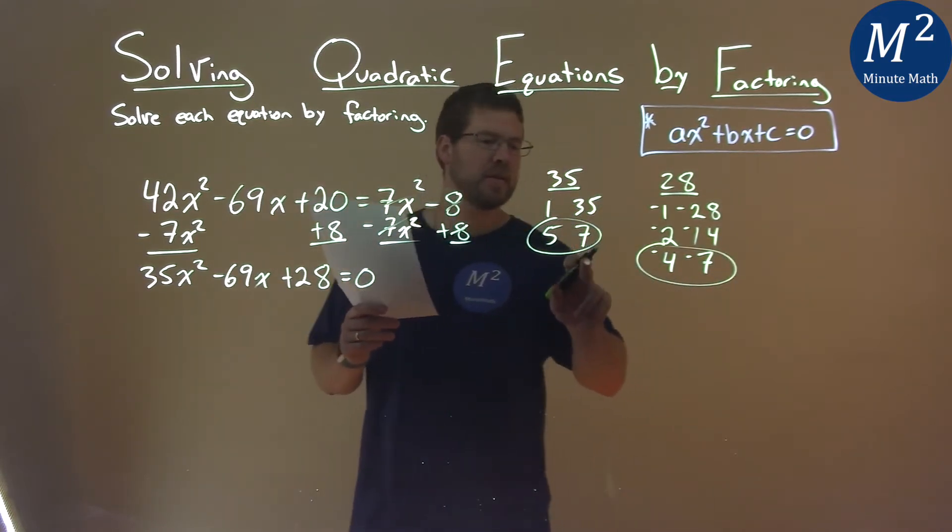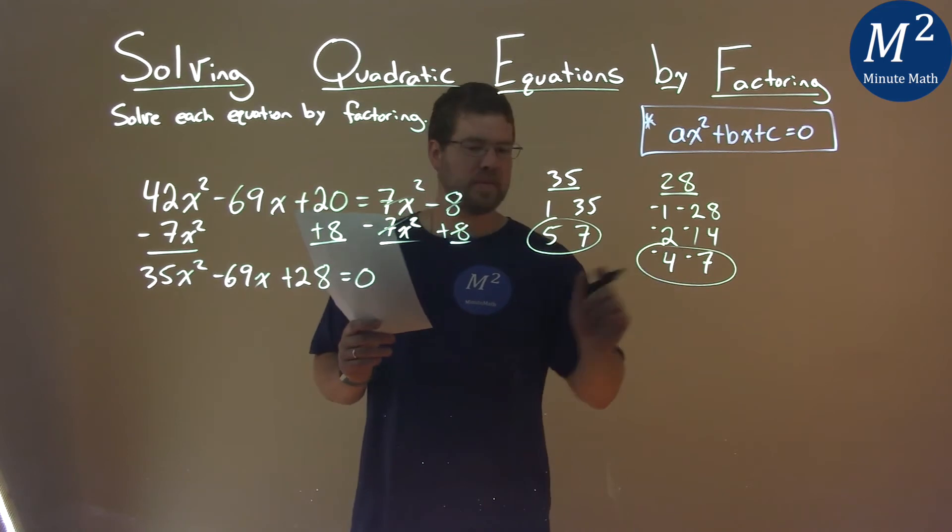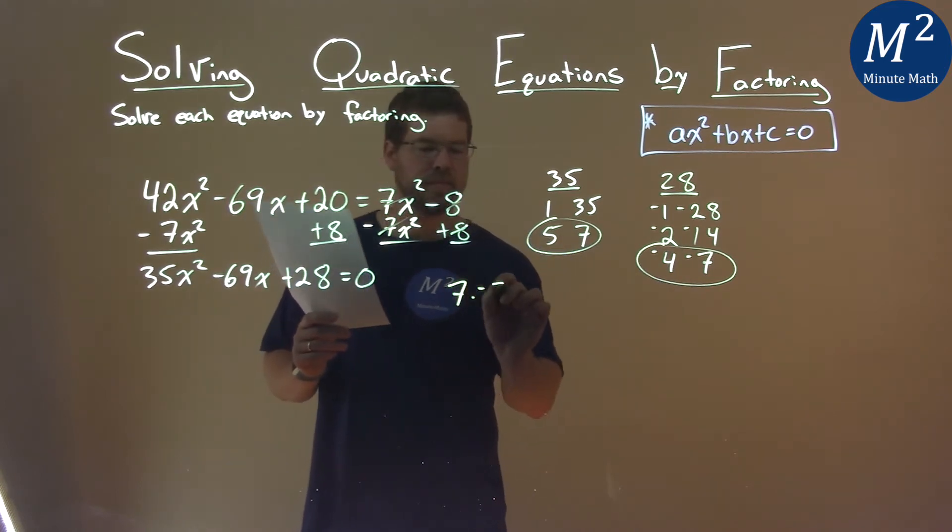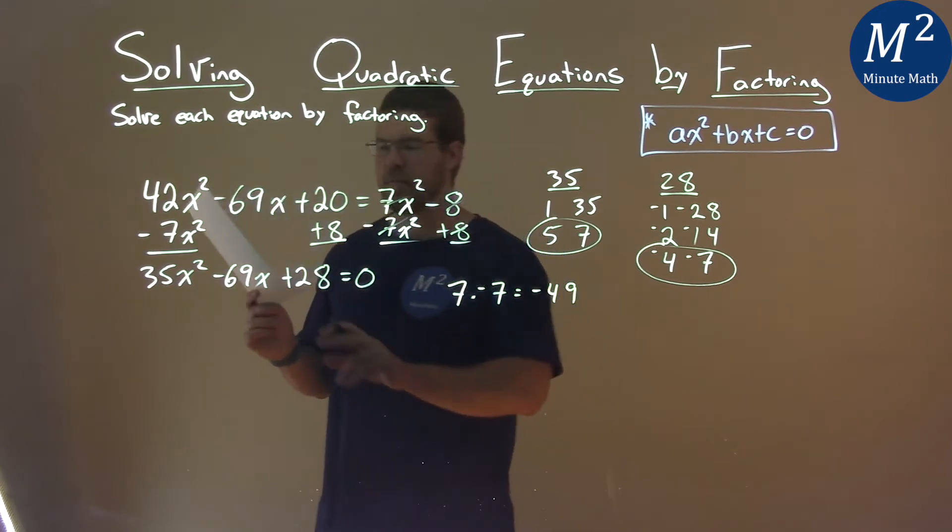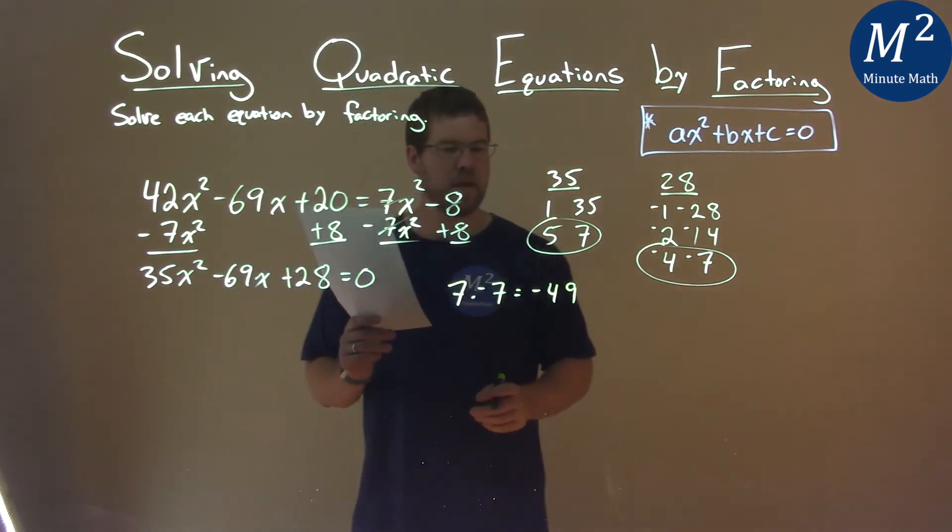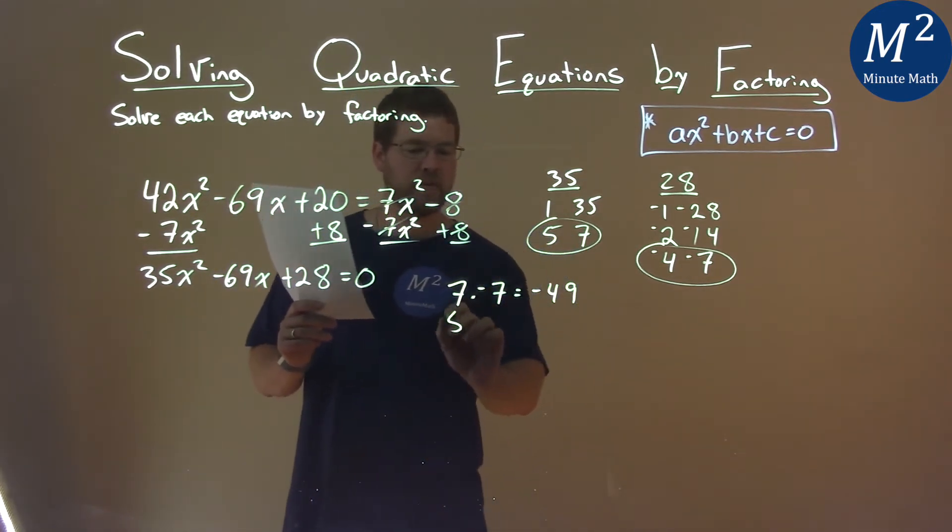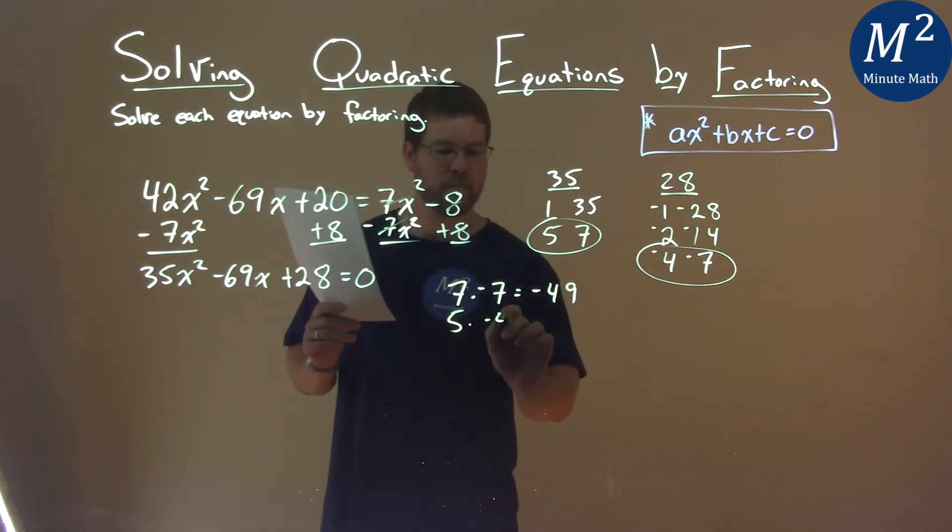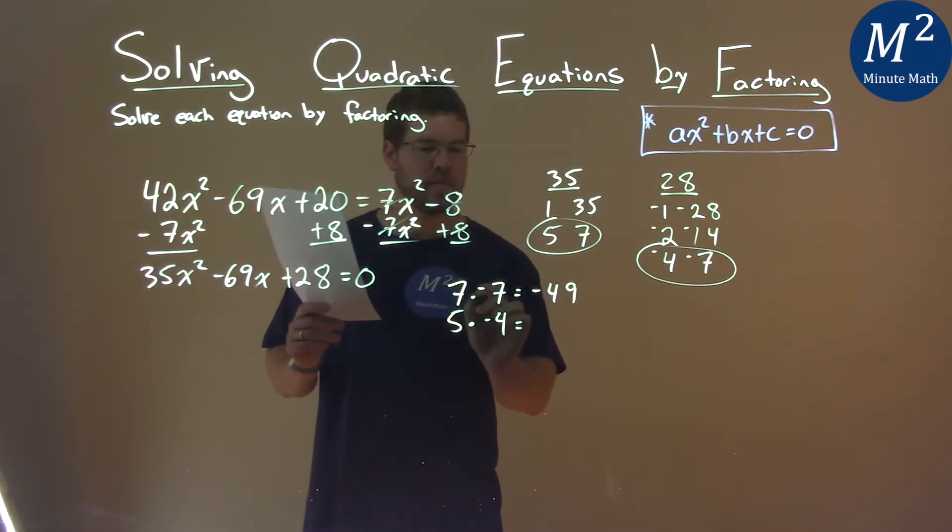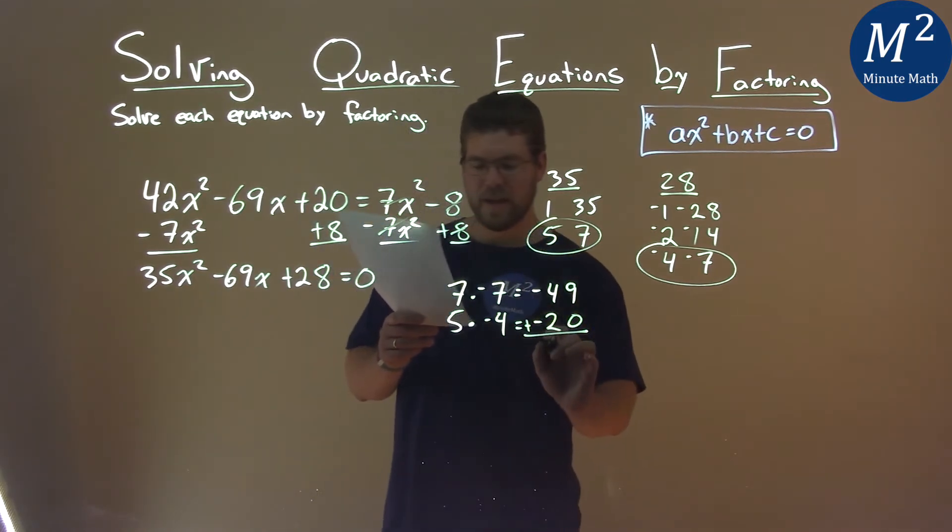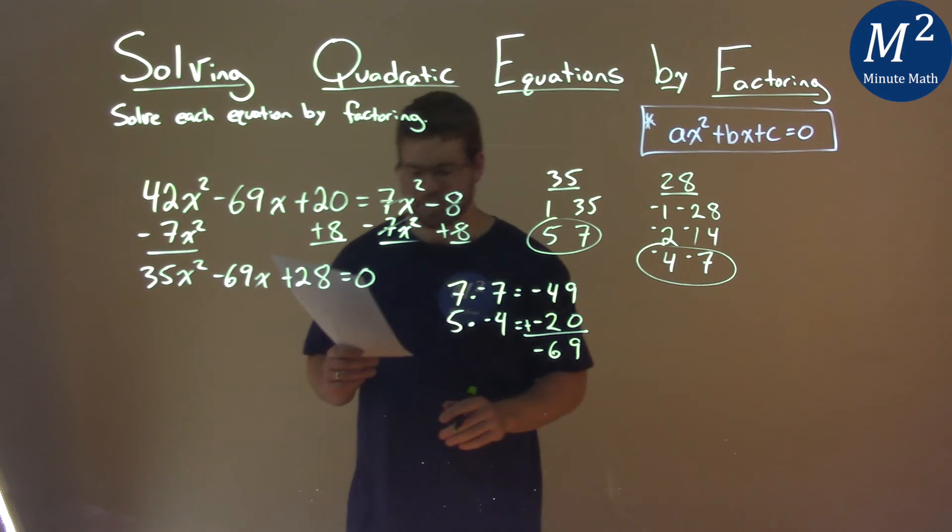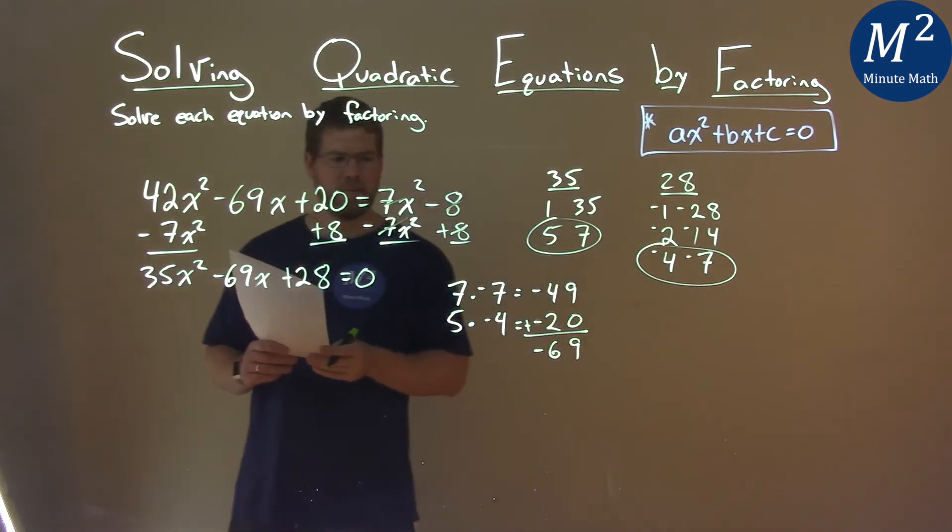Mainly because it's a good educated guess, but 7 times a negative 7 is equal to a negative 49, which gets me close to the negative 69. Then, the other number, 5 times a negative 4, what does that equal? Well, that's a negative 20. We add the two together, like we're supposed to, and we get a negative 69. So we've got our pair right there.